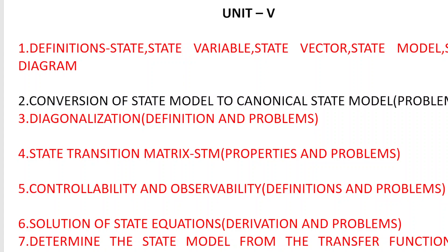The seventh topic is: determine the state model from a transfer function or differential equation and vice versa. They may give a differential equation or transfer function and ask you to convert to state model, or give the state equation and output equation and ask for the transfer function or differential equation — the reverse process. In unit 5, almost all topics are very important and repeated questions. Topics marked in red in the slides are the most important ones to study before the examination.